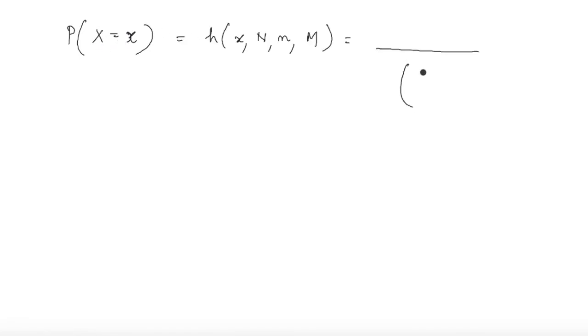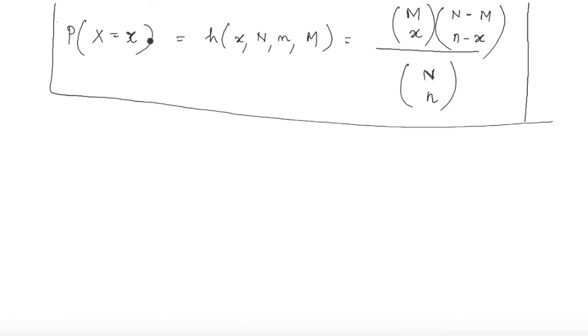We have to select a sample of size n, so this is N choose n. Then if we have to select x number of successes, we write M choose x, where M denotes successes in the population. The remaining units come from failures, so N minus M choose n minus x. This is the probability distribution of the hypergeometric variable.